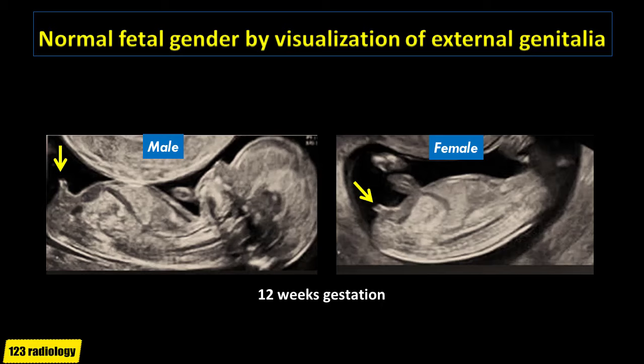On the image on the right side of the screen, at 12 weeks gestation, if we follow the rump from dorsal to ventral, the genital tubercle is directed anteriorly, denoting male fetus. On the image on the left side of the screen, the genital tubercle is seen directed caudally or downwards, denoting female fetus.